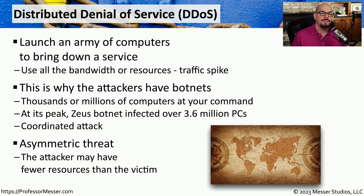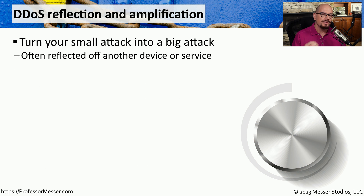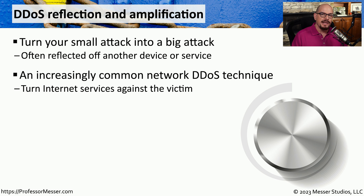We sometimes refer to this as an asymmetric threat, because the attacker has relatively few resources and can easily bring down organizations that have many more systems and much more bandwidth. Attackers have also found that they can create a much more efficient attack by sending large amounts of data to bring devices down even faster. Furthermore, attackers have found ways to send small amounts of data that are suddenly amplified into very large amounts of data to cause the denial of service.